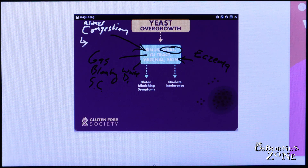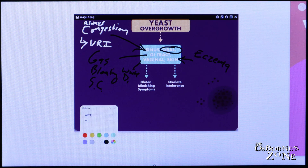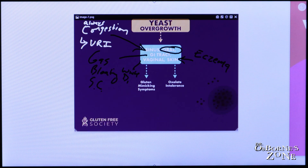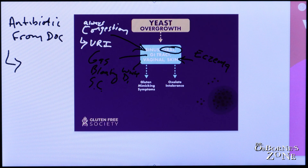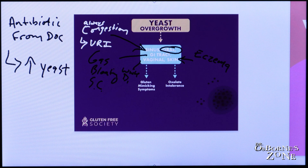If you have chronic upper respiratory infections and you keep going back to the doctor and they keep giving you antibiotics, this is one of the problems with misdiagnosis. Chronic antibiotic use — because they think your upper respiratory infection is bacterial — actually increases yeast and increases their strength. Even single antibiotic use can exacerbate or cause candida overgrowth.